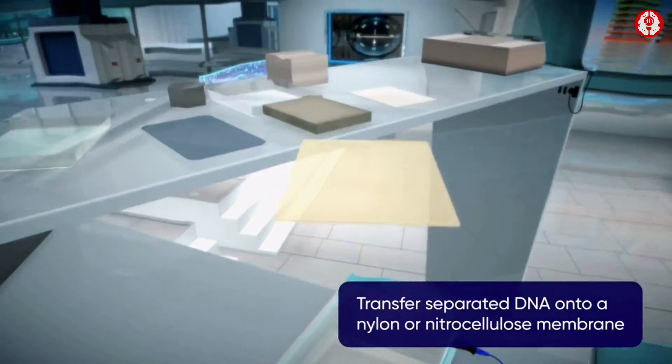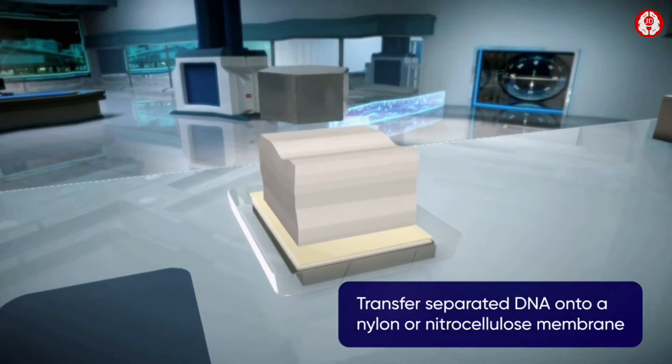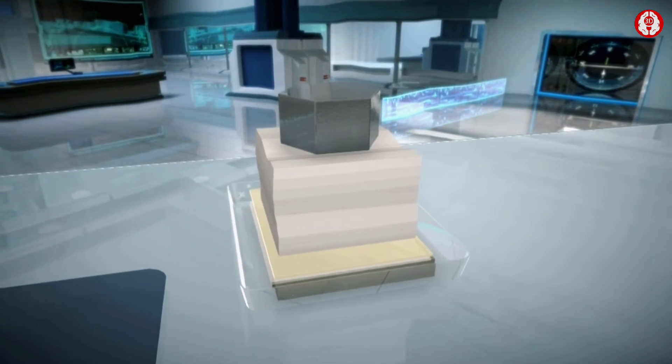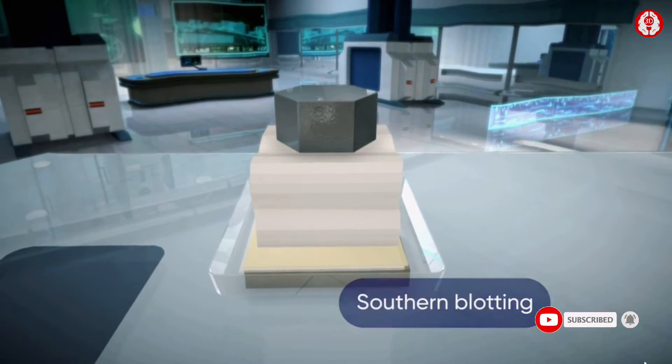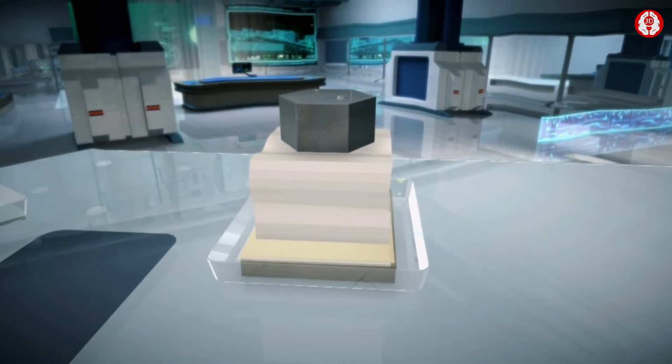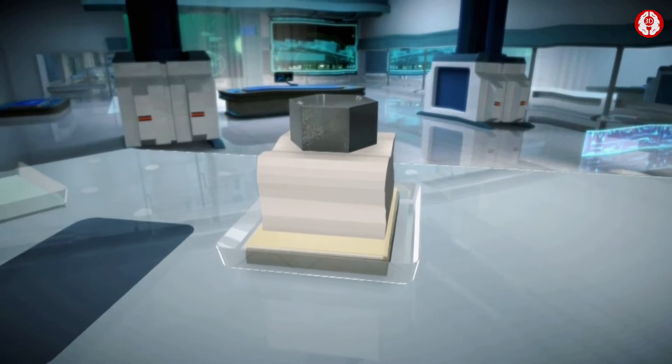DNA is then blotted onto a nylon or synthetic nitrocellulose membrane. This technique is known as Southern blotting. It reproduces the distribution of the DNA fragments on the gel.